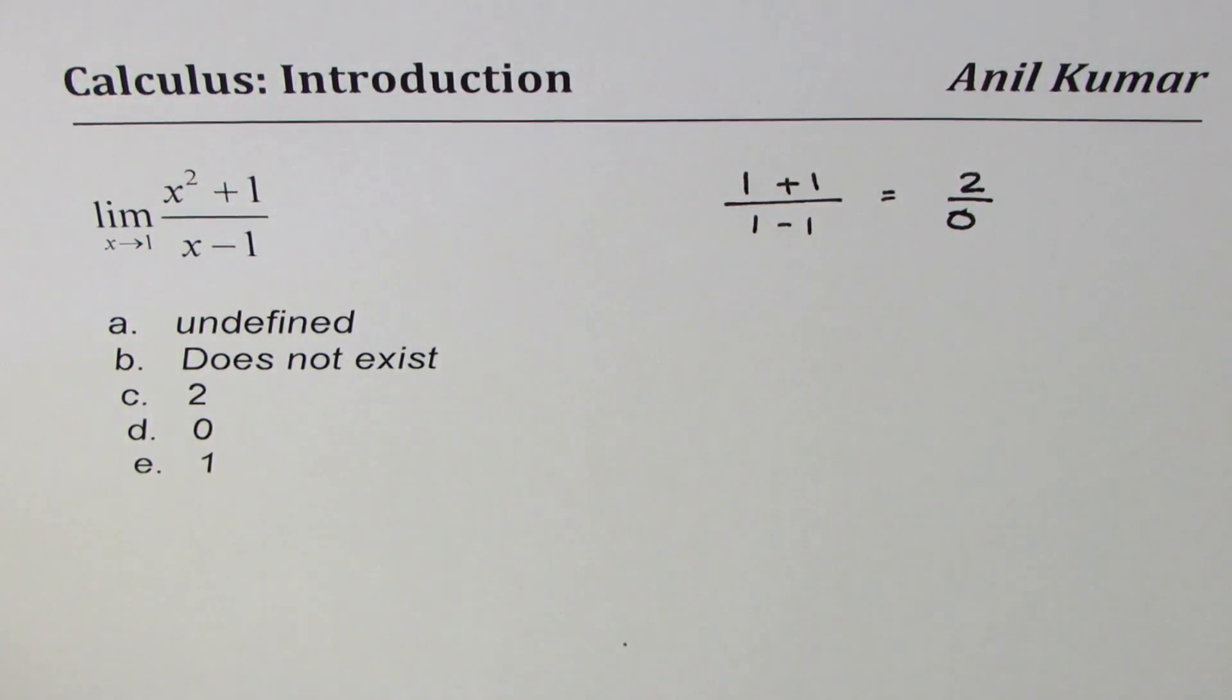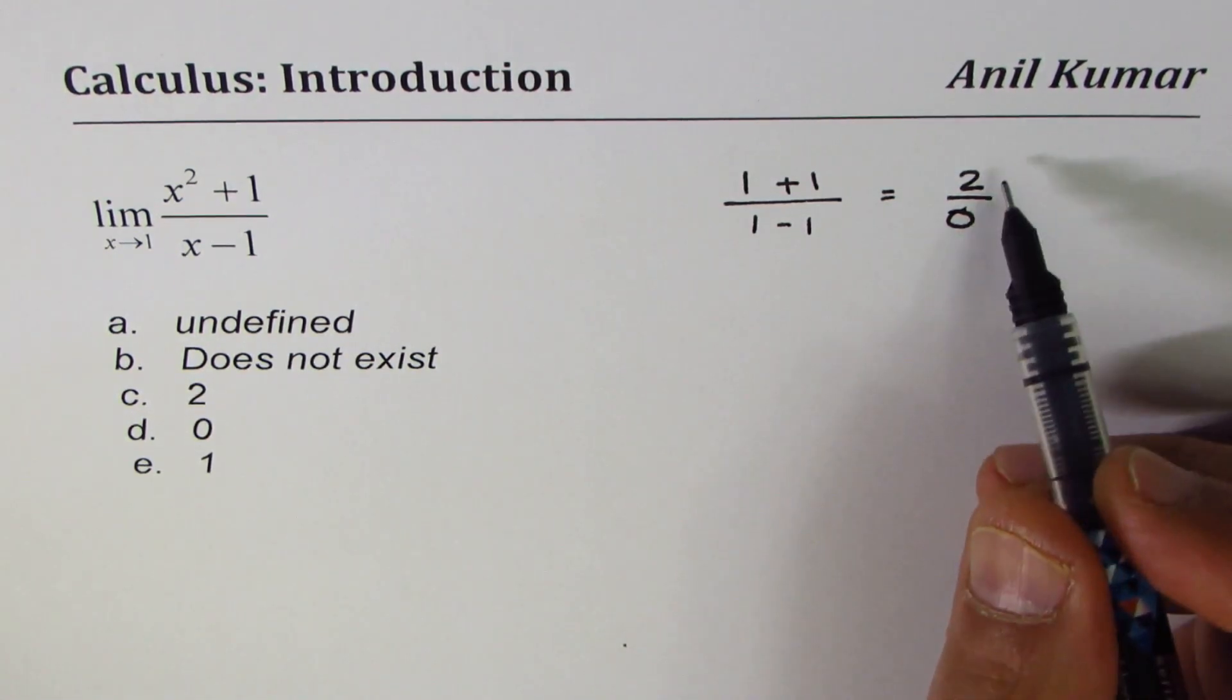Now 2 over 0 is not defined, is it okay? You cannot really divide by 0.